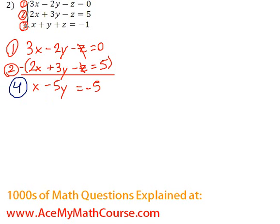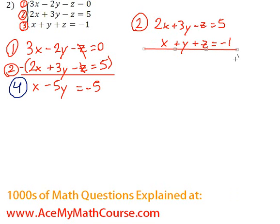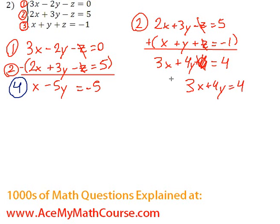Now I'm going to combine equations 2 and 3 and also eliminate z. So equation 2 again is 2x plus 3y minus z equals 5. And we have x plus y plus z equals negative 1. Great. Now we can just add them because negative z plus z is 0. And 5 plus negative 1 is just 4. 2x plus x is 3x. And 3y plus y is just 4y. So I can rewrite this equation as 3x plus 4y equals 4. And that's equation number 5.